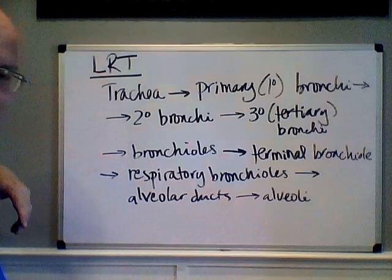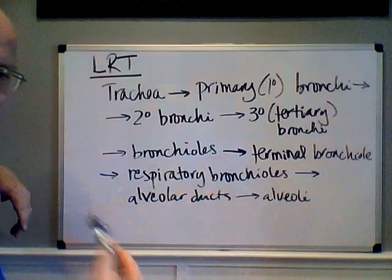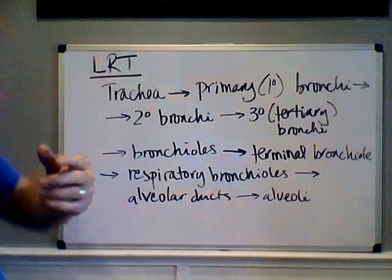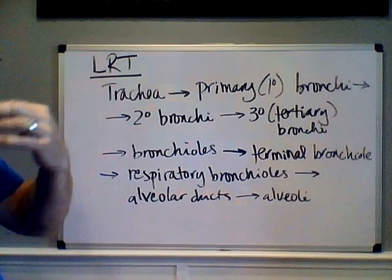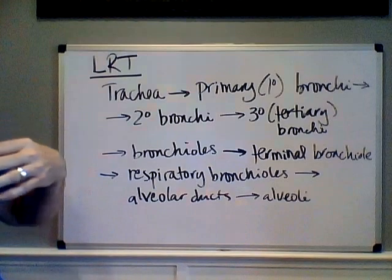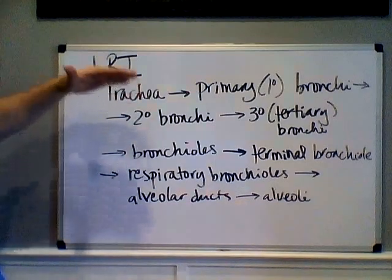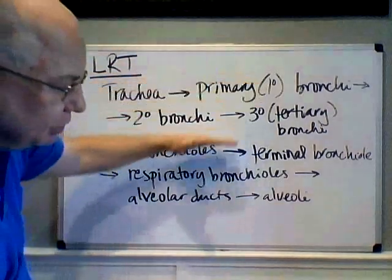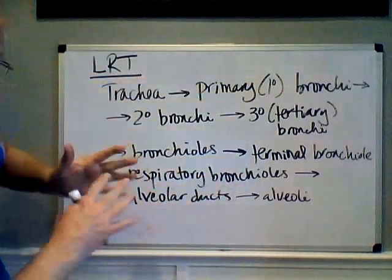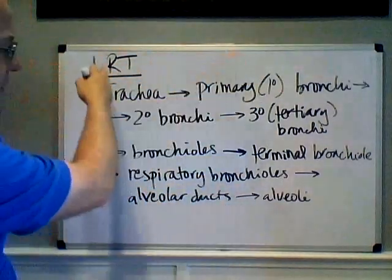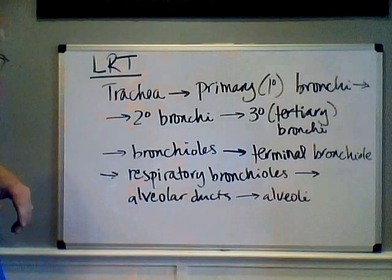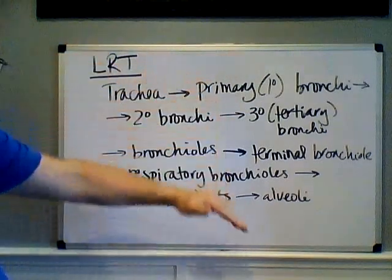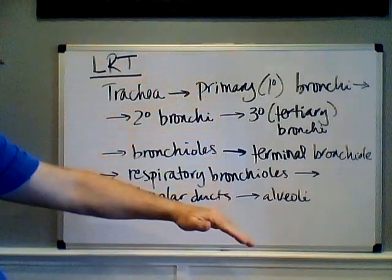To trace a drop of air from the outside world in, you would start with the external nares, go through the nasal cavity, internal nares, through the pharynx with its three sections, then the larynx. Then you hit the lower respiratory tract and continue through all of those structures. Put all the structures from the upper and lower respiratory tract in the order given, and that traces a drop of air from the outside world into your lungs.